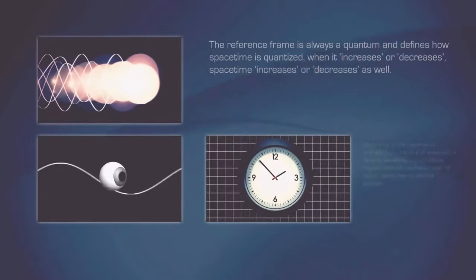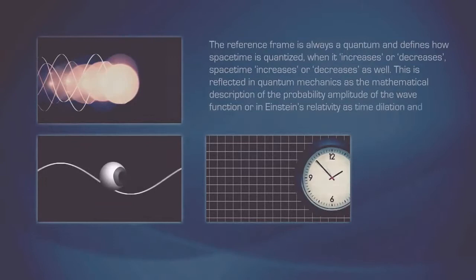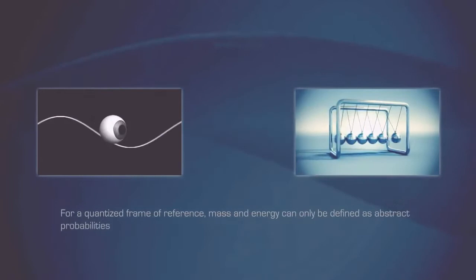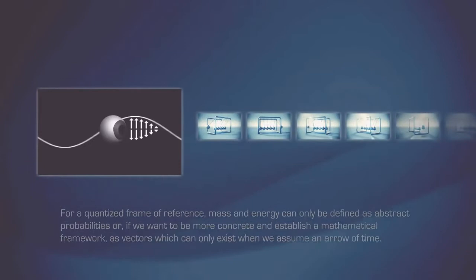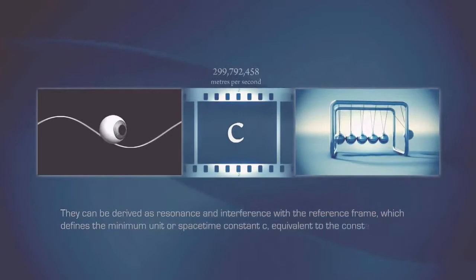This is reflected in quantum mechanics as the mathematical description of the probability amplitude of the wave function, or in Einstein's relativity as time dilation and length contraction. For a quantized frame of reference, mass and energy can only be defined as abstract probabilities, or if we want to be more concrete and establish a mathematical framework, as vectors which can only exist when we assume an arrow of time. They can be derived as resonance and interference with the reference frame, which defines the minimum unit or spacetime constant c, equivalent to the constant of Planck in quantum mechanics.